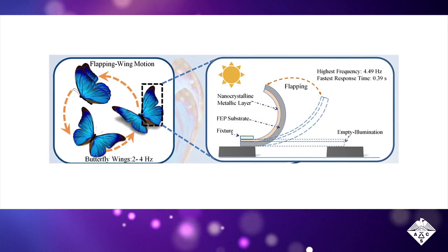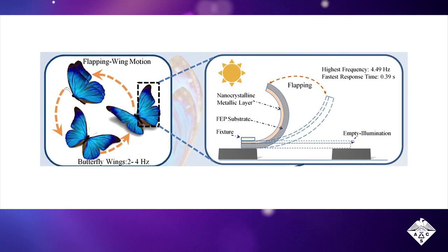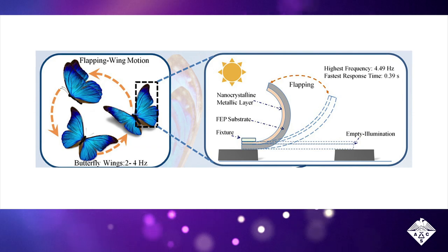Ningyi Yuan, Jianning Ding, and colleagues wanted to develop artificial wings that convert natural sunlight into a flapping motion without the need for additional hardware.